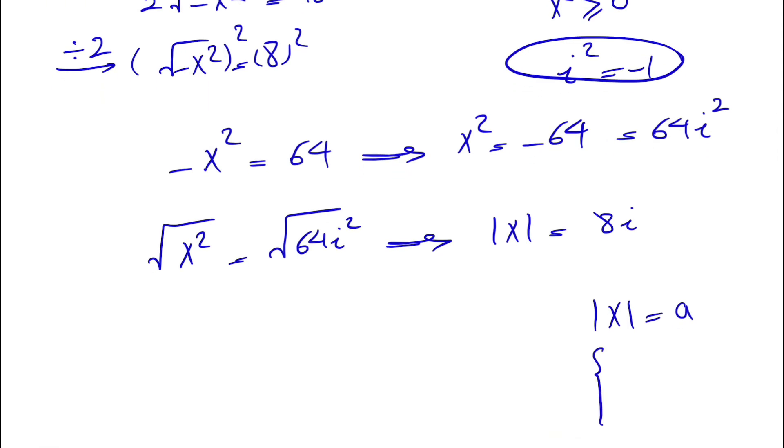When we have the absolute value of something equal to a, we have two answers: x can be a or x can be minus a. So in our case, x can be 8i or x can be minus 8i. Two answers for this question.